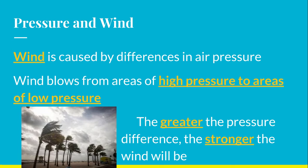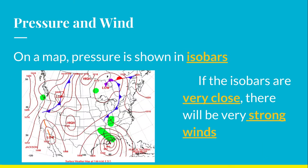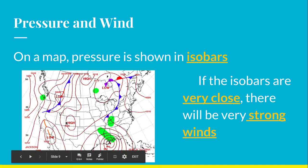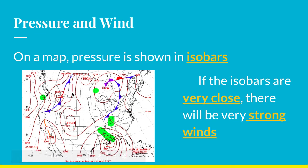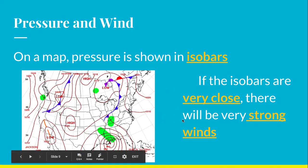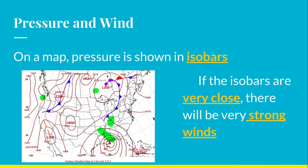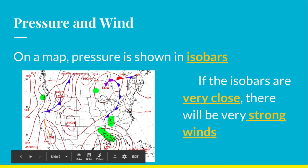Now we can predict how bad winds are going to be on a map by looking at something called isobars. You remember how pressure is measured in a barometer — well, on a map, pressure is shown in isobars. So this circle, this line, all represents one single air pressure. This line is another air pressure that's a little bit lower, and this line is another set of air pressure. It's kind of like a topographical map — just like a topographical map, if the bars are really close together, that means a sudden change in elevation. Well, if the isobars are very close together, that means you have a sudden change in air pressure, and that's going to result in very strong winds.